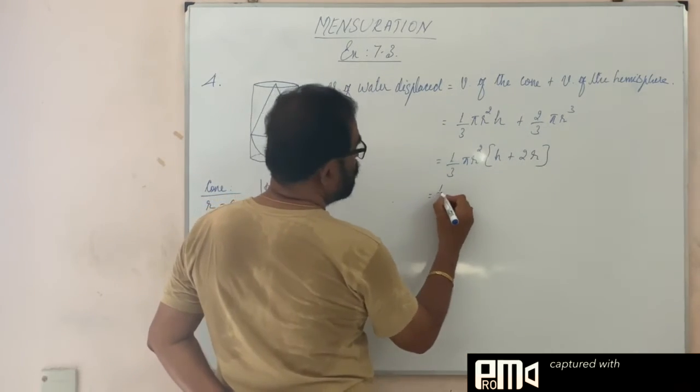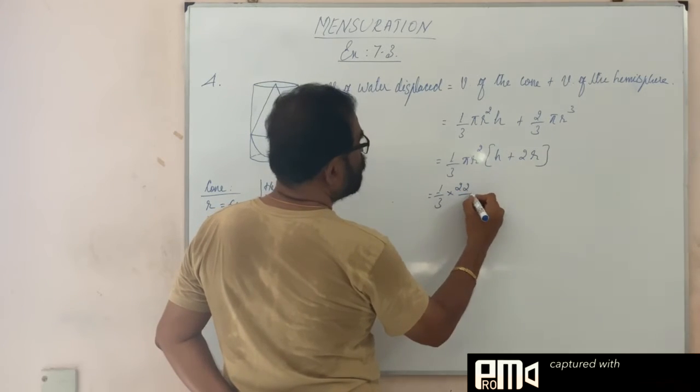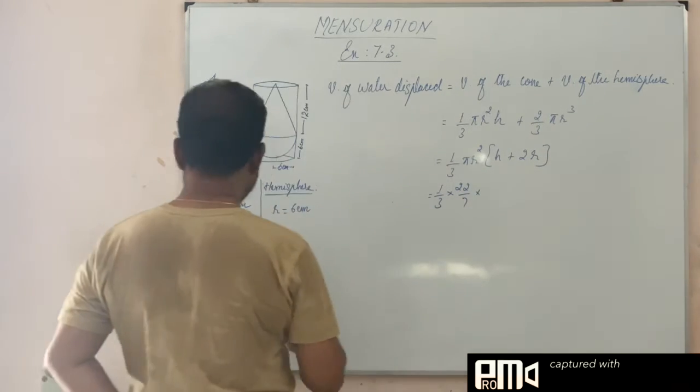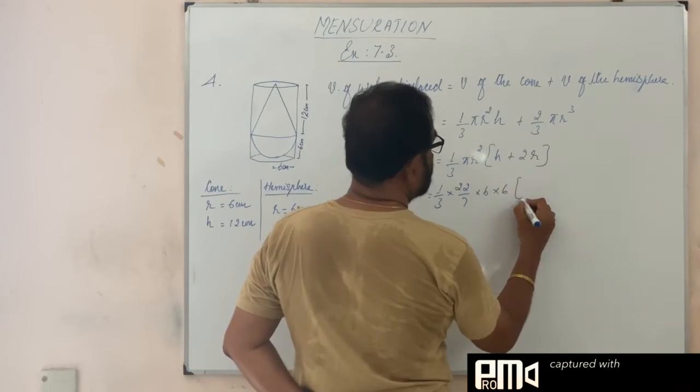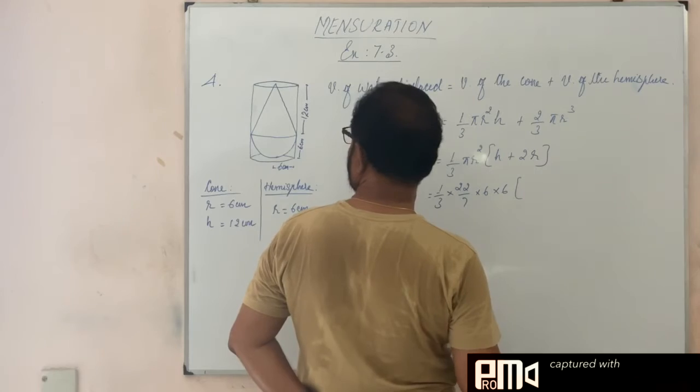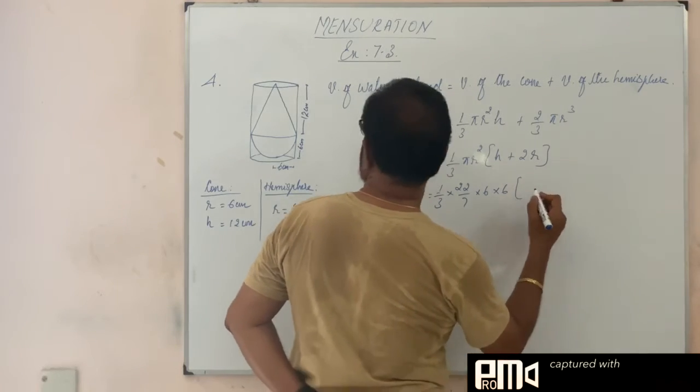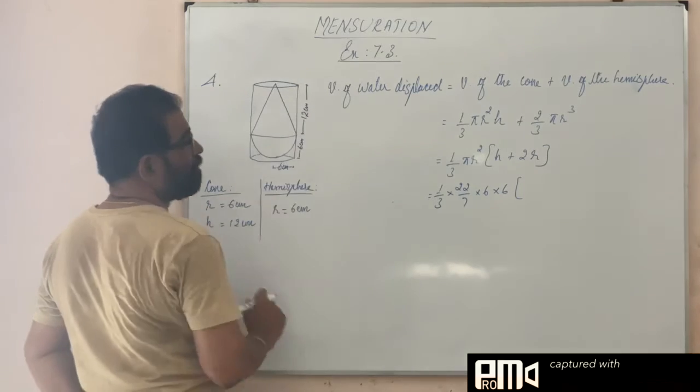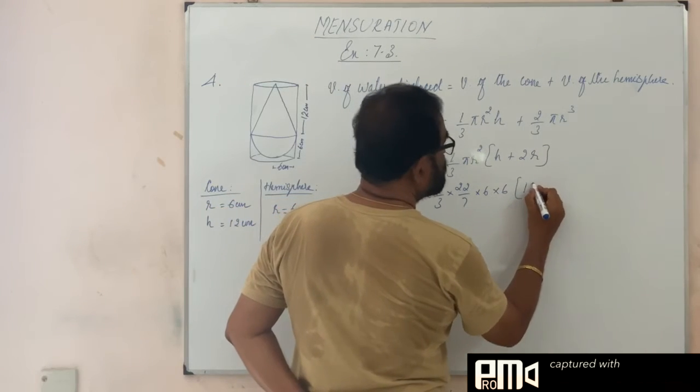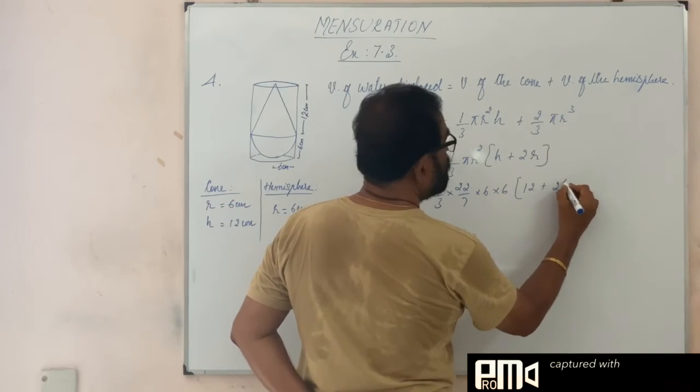That is equal to 1/3 × 22/7 × r². What is the radius? 6. 6 × 6. h. Height of the cone is 12 is given here. Height of the conical part is 12 cm. From here to here is 12. So 12 plus 2 × 6.